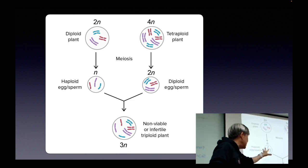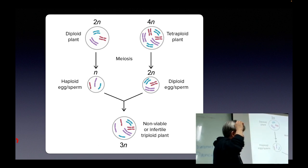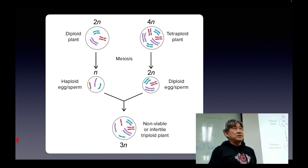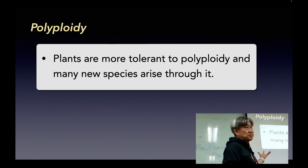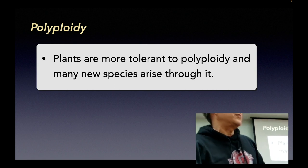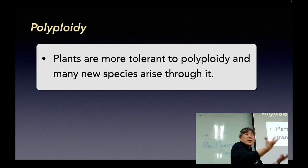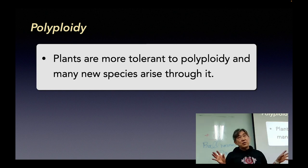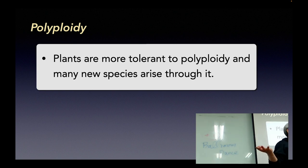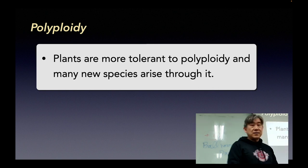This polyploidy is very prevalent and widespread in the plant kingdom. It happens a lot. Plants seem to be more tolerant — they just survive. And sometimes this odd number multiplication, like triploid, is also possible, though not as common as tetraploid. The reason plants have more widespread polyploidy is because in animals, having tetraploid or triploid usually means the offspring cannot survive. But plants are more tolerant.